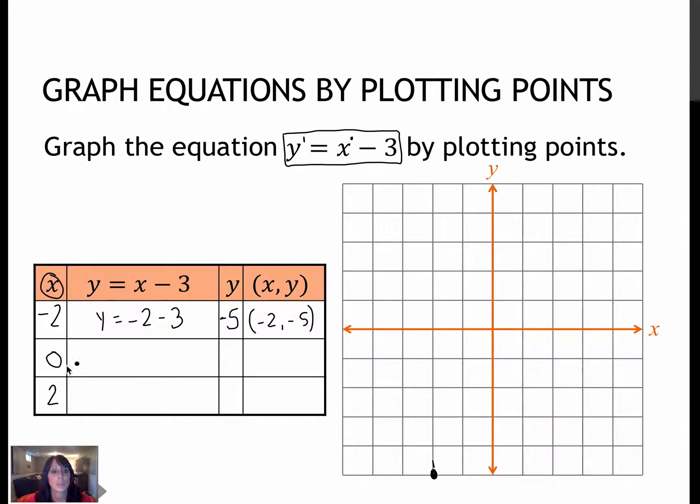When I plug in 0, I get y equals 0 minus 3. 0 minus 3 is, of course, negative 3. So 0 for the x and negative 3 for the y. So that's 0 right or left. Oops, not there. 3 down, not 2 down.